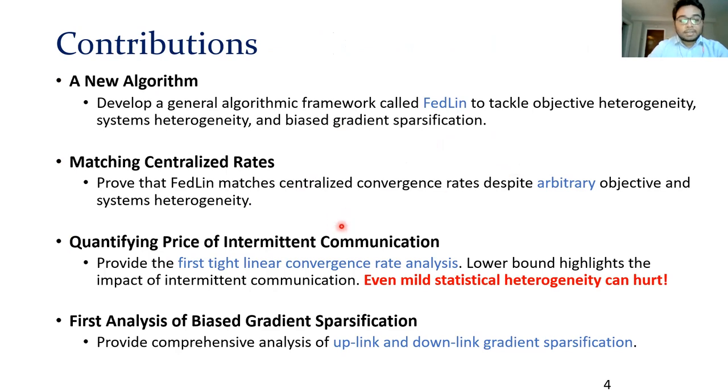Next, a key contribution that we provide is to perform the first tight linear convergence rate analysis in FL. We establish lower bounds for FedLIN that match the upper bounds. These bounds are very informative because they reveal the price paid for performing intermittent communication. The key takeaway from our analysis is that even mild statistical heterogeneity can end up hurting convergence rates. And finally, we provide the first comprehensive analysis of biased gradient sparsification schemes, such as top-K, in the context of FedLIN.